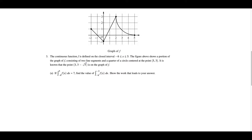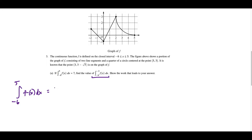For part A, what we have to do is find the value of the integral from negative 6 to negative 2. We were given a graph of f of x, but we have no idea what's going on from negative 6 to negative 2. What we do know is that the integral from negative 6 to 5 of f of x equals 7, and this represents the area all the way from negative 6 to 5. We can break this up into multiple pieces.